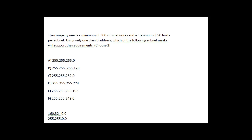First of all, we're going to start with one Class B address. Let's say 160.32, which is in the Class B range — Class B is 128 to 191. So 160.32 is our starting address. We've got the subnet mask 255.255.0.0, which is actually a net mask — a Class B net mask.